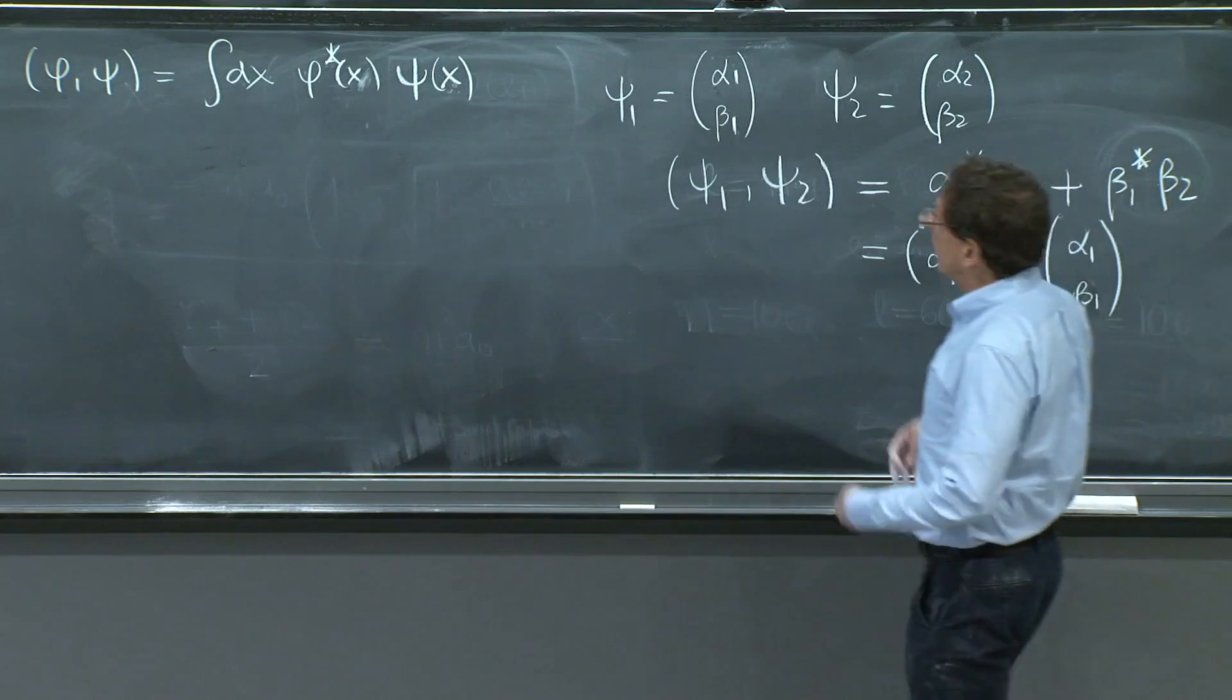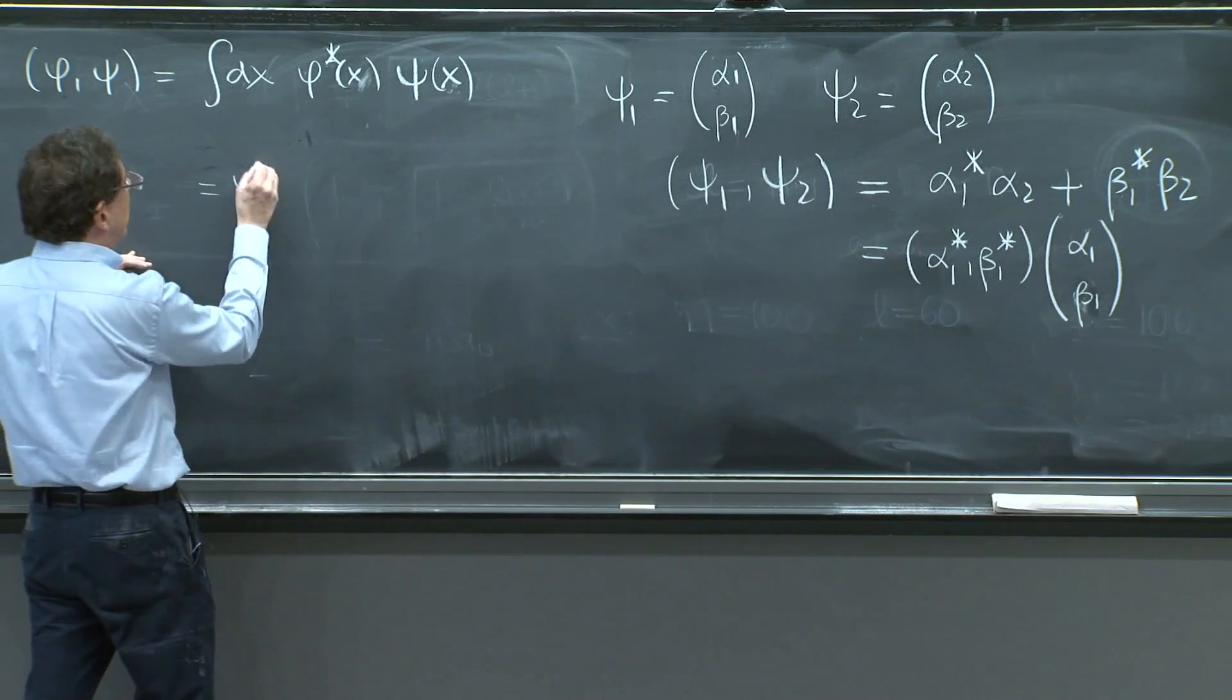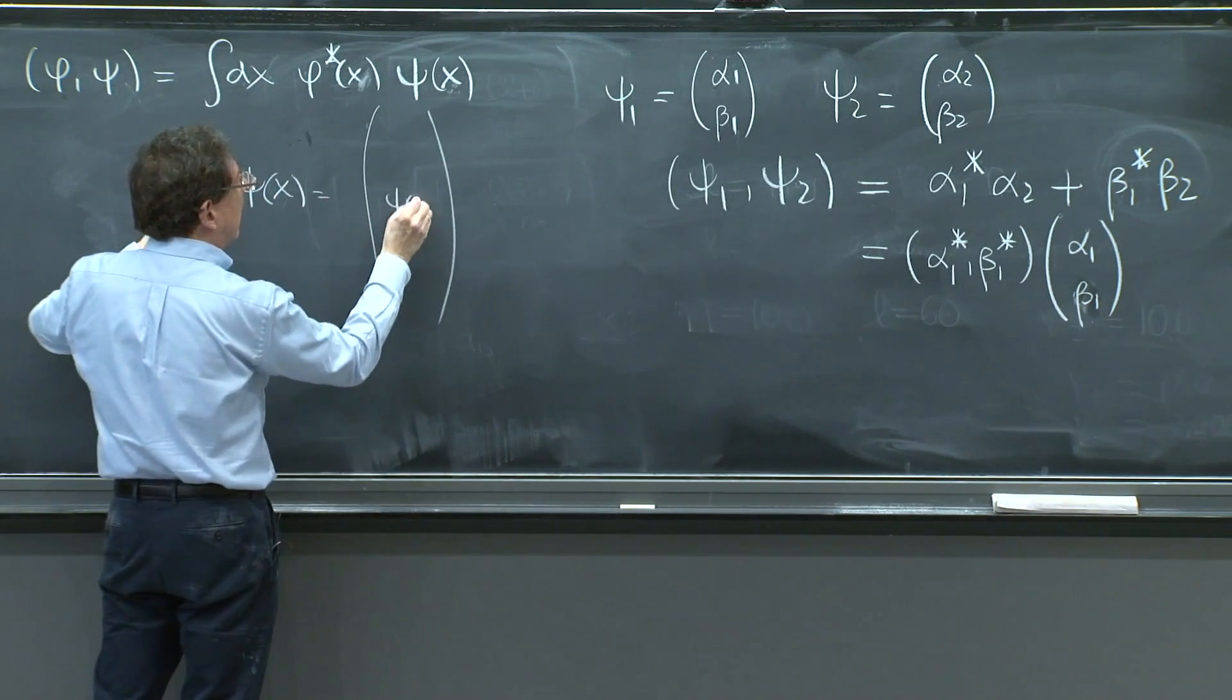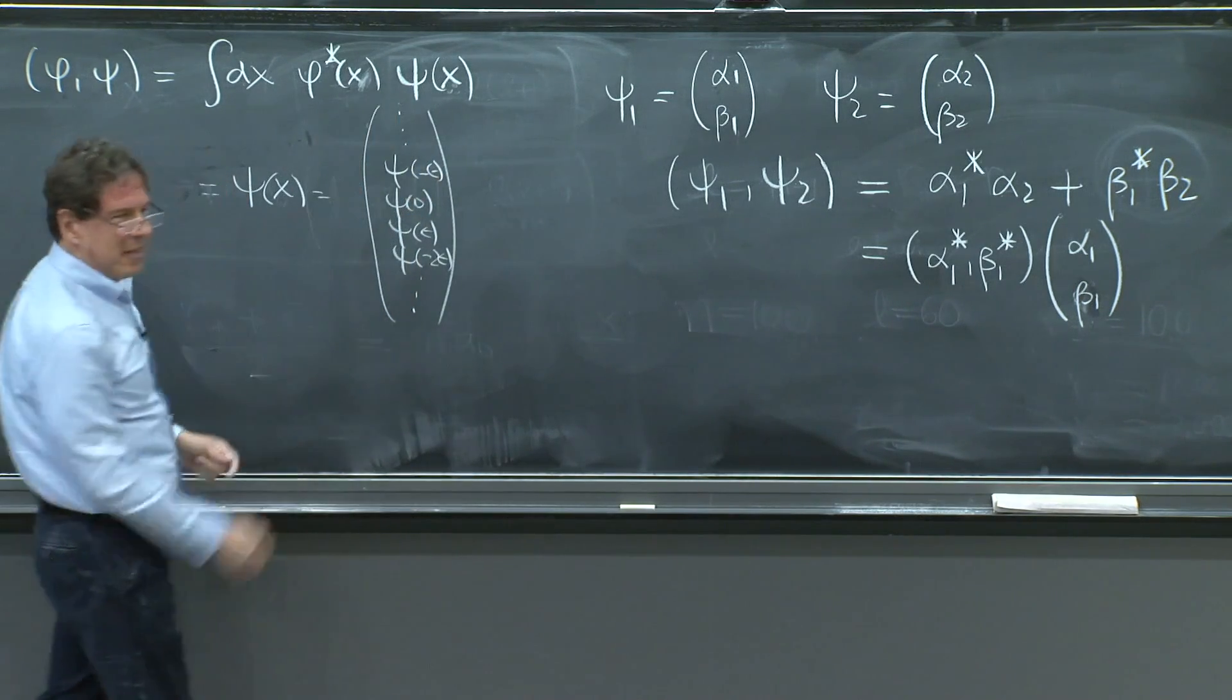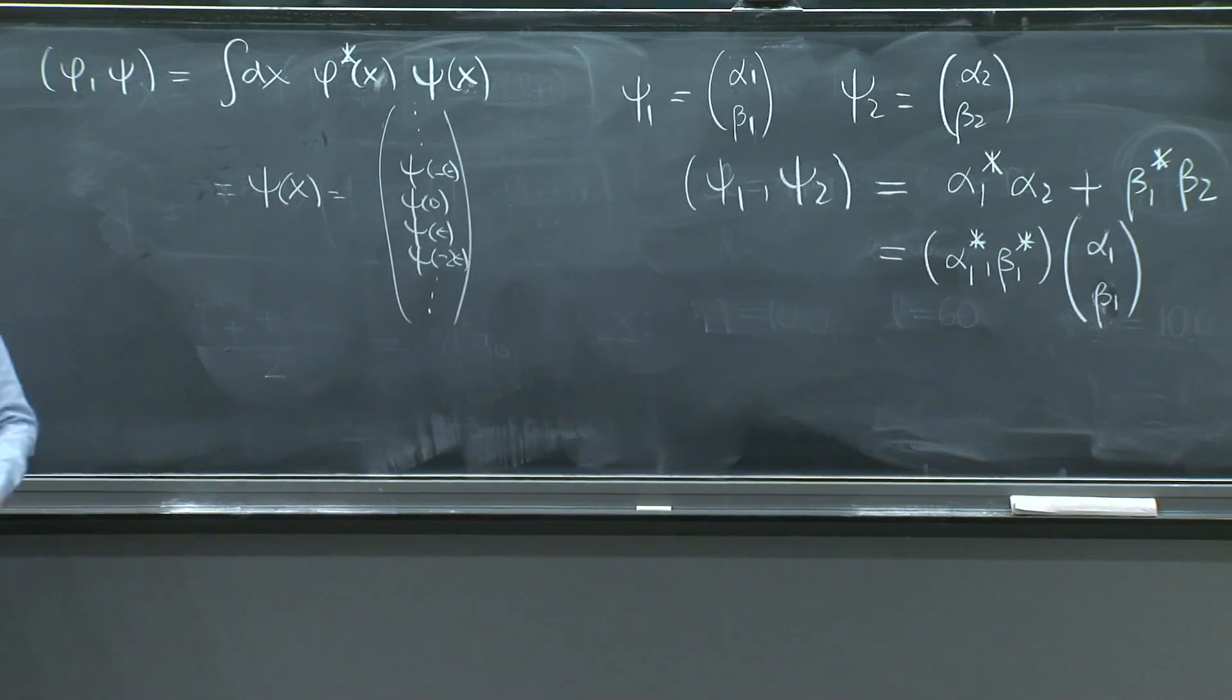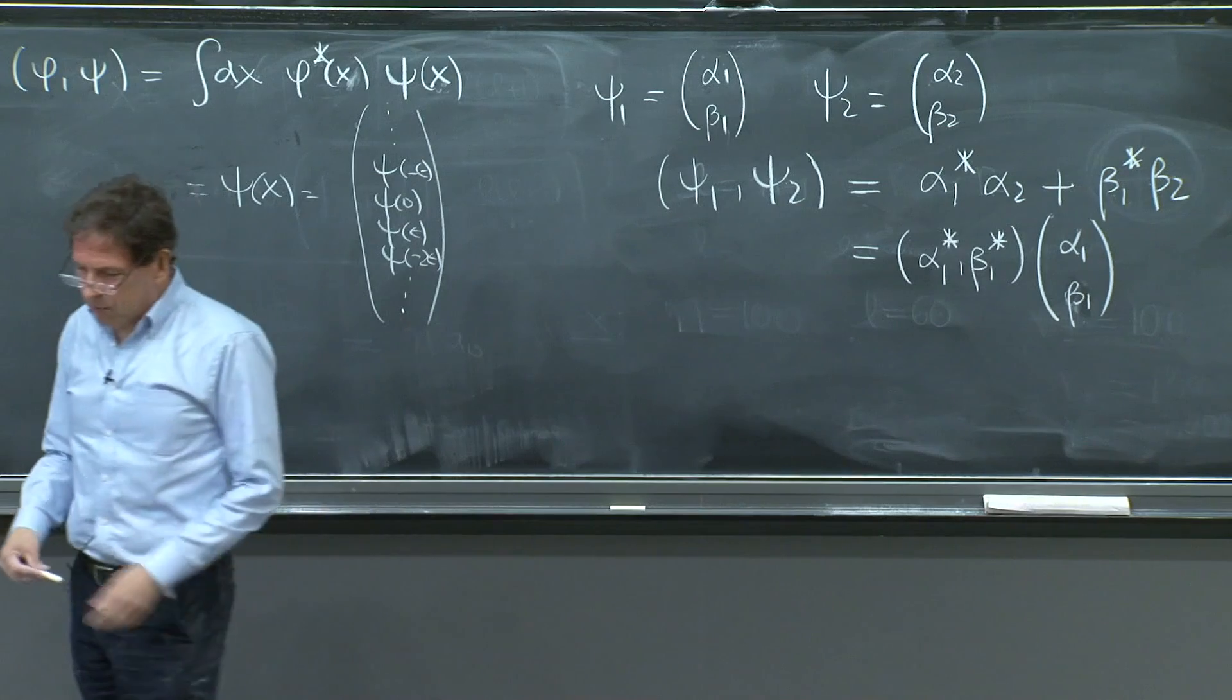When you study a little more quantum mechanics in 8.05, you will explore this analogy even more in that you will think of a wave function as a column vector, infinite dimensional: ψ(0), ψ(ε), ψ(2ε), ψ(-ε). So you slice the x-axis and construct an infinite vector. And that's your old wave function. So it's not so unnatural to do this. And this will be our inner product.